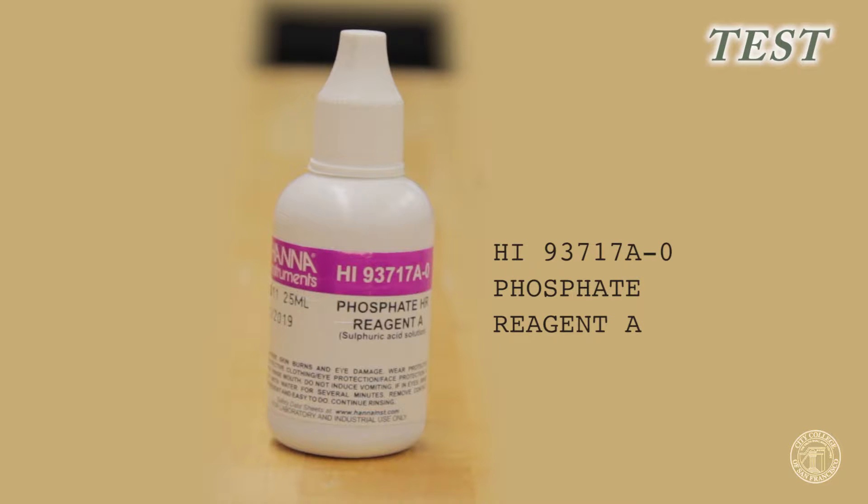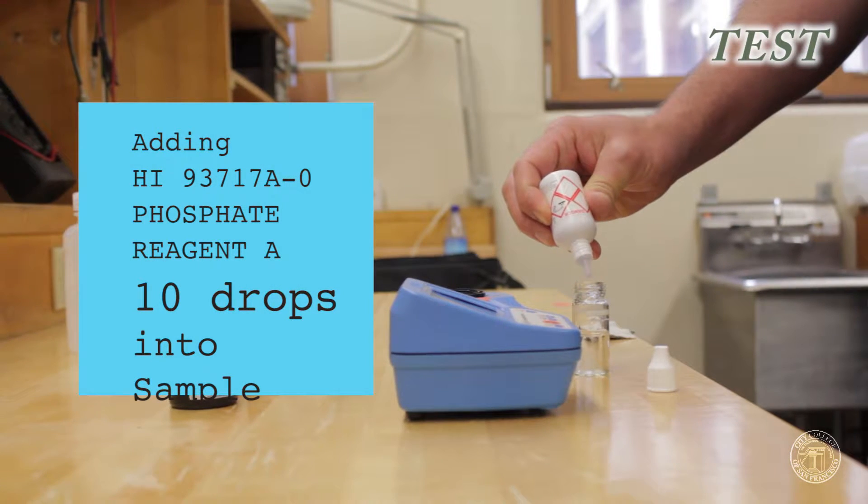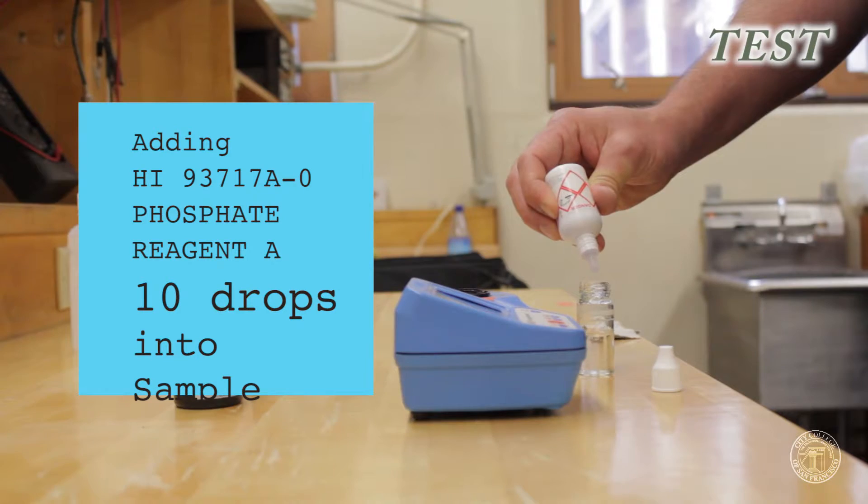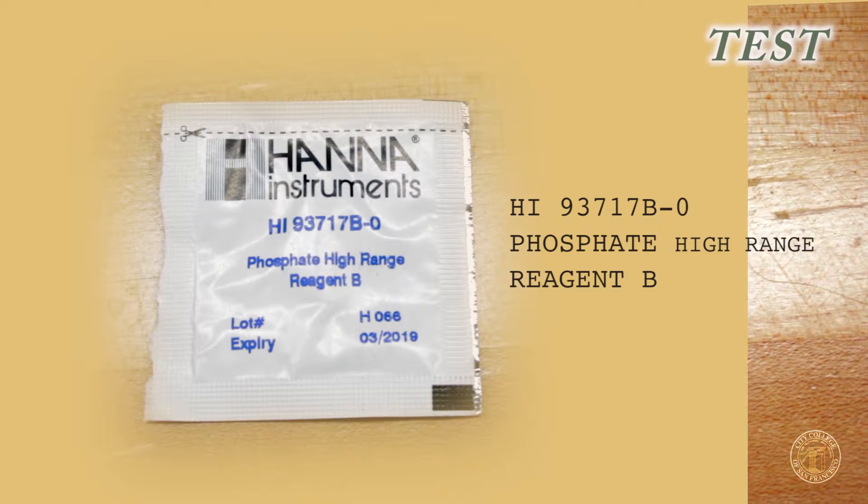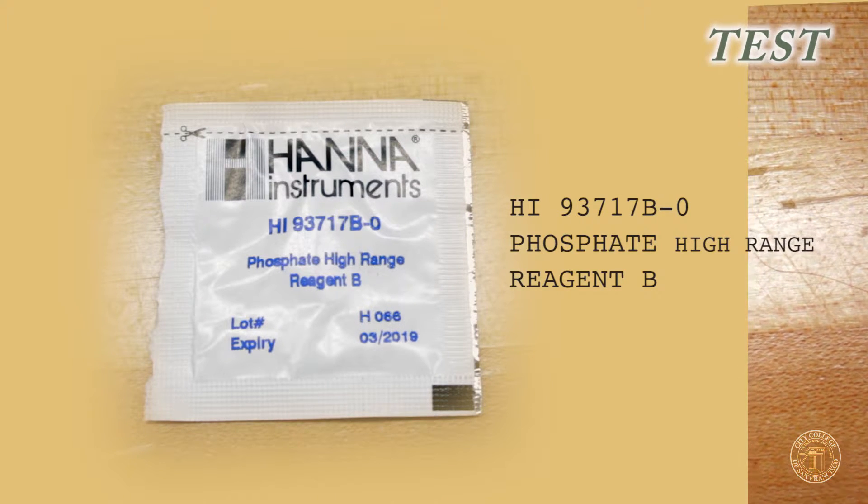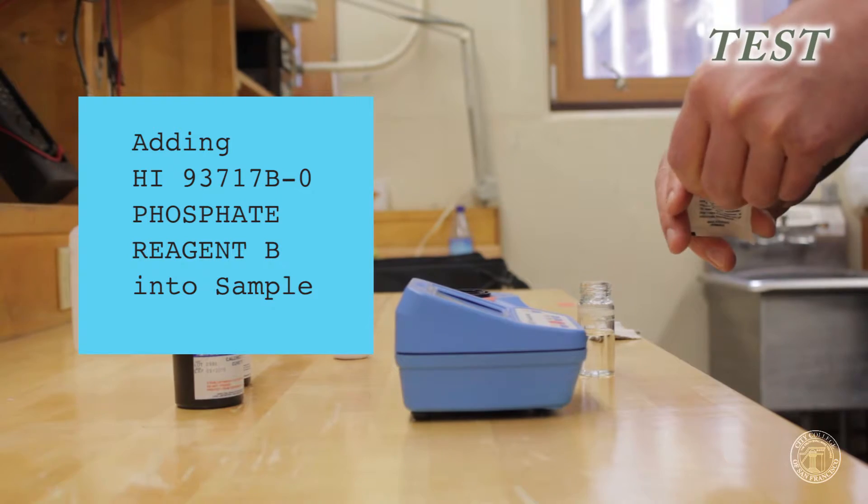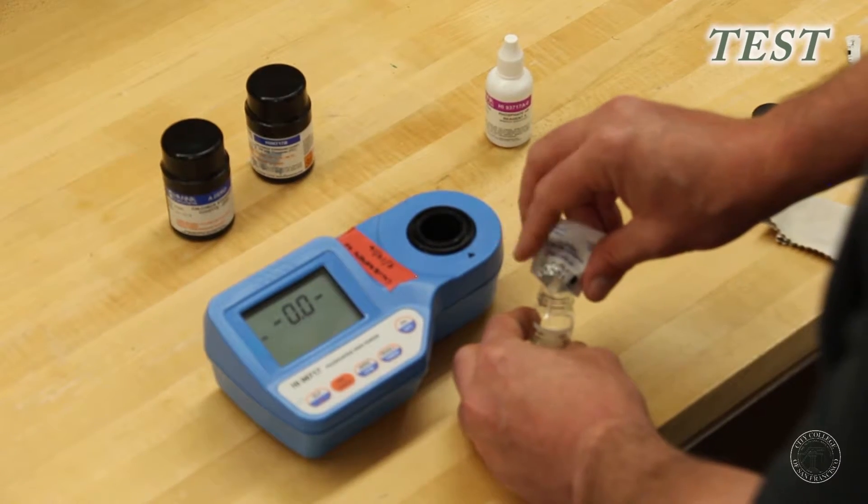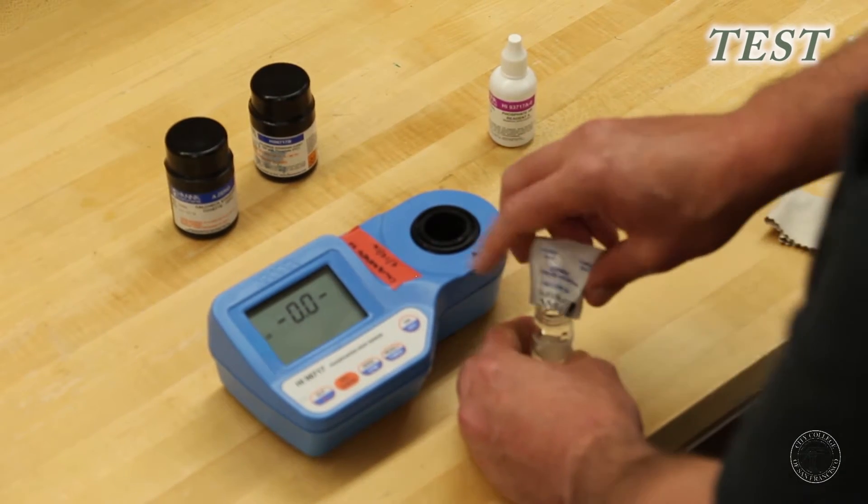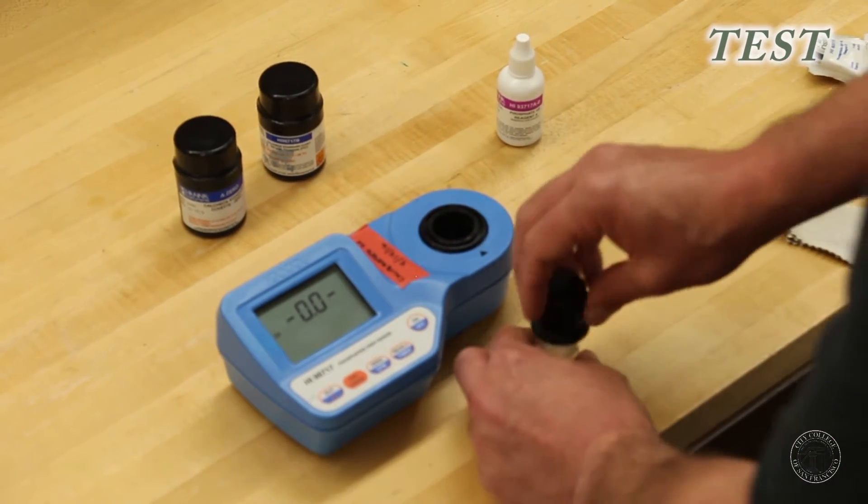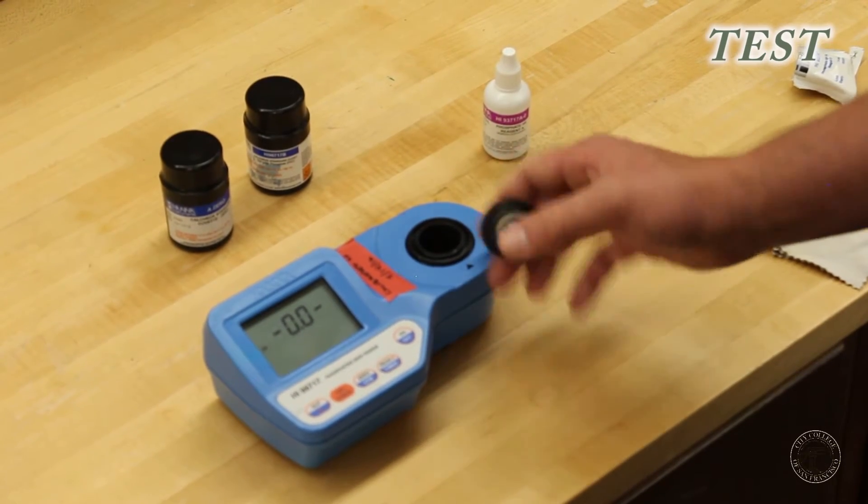You'll use reagent A. Ten drops of this go into your sample. Once you add that, you'll add your reagent B, one full pack of the phosphate high range reagent B. And now replace your cap. Invert a few times gently to mix. Try not to make any bubbles here in your solution.